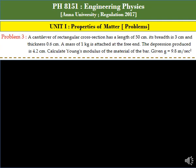Problem 3: A cantilever of rectangular cross-section has a length of 50 centimeter, its breadth is 3 centimeter and thickness 0.6 centimeter. A mass of 1 kg is attached at the free end. The depression produced is 4.2 centimeter.